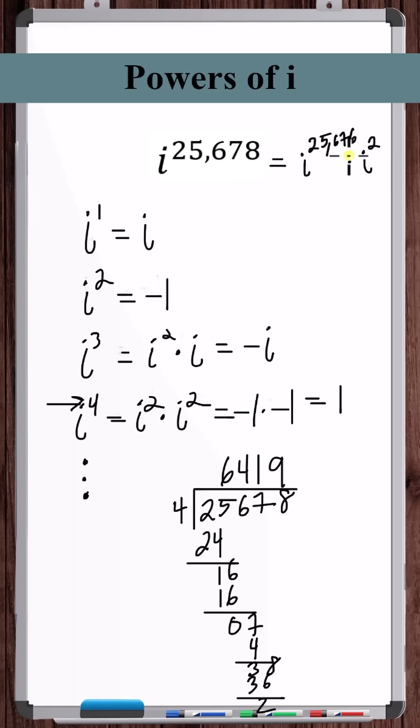But we did this because, with this remainder of 2, we know that 25,676 is divisible by 4. That means that this is equal to 1, and we're left with just i squared, which is equal to negative 1. So i to the power of 25,678 is equal to negative 1.